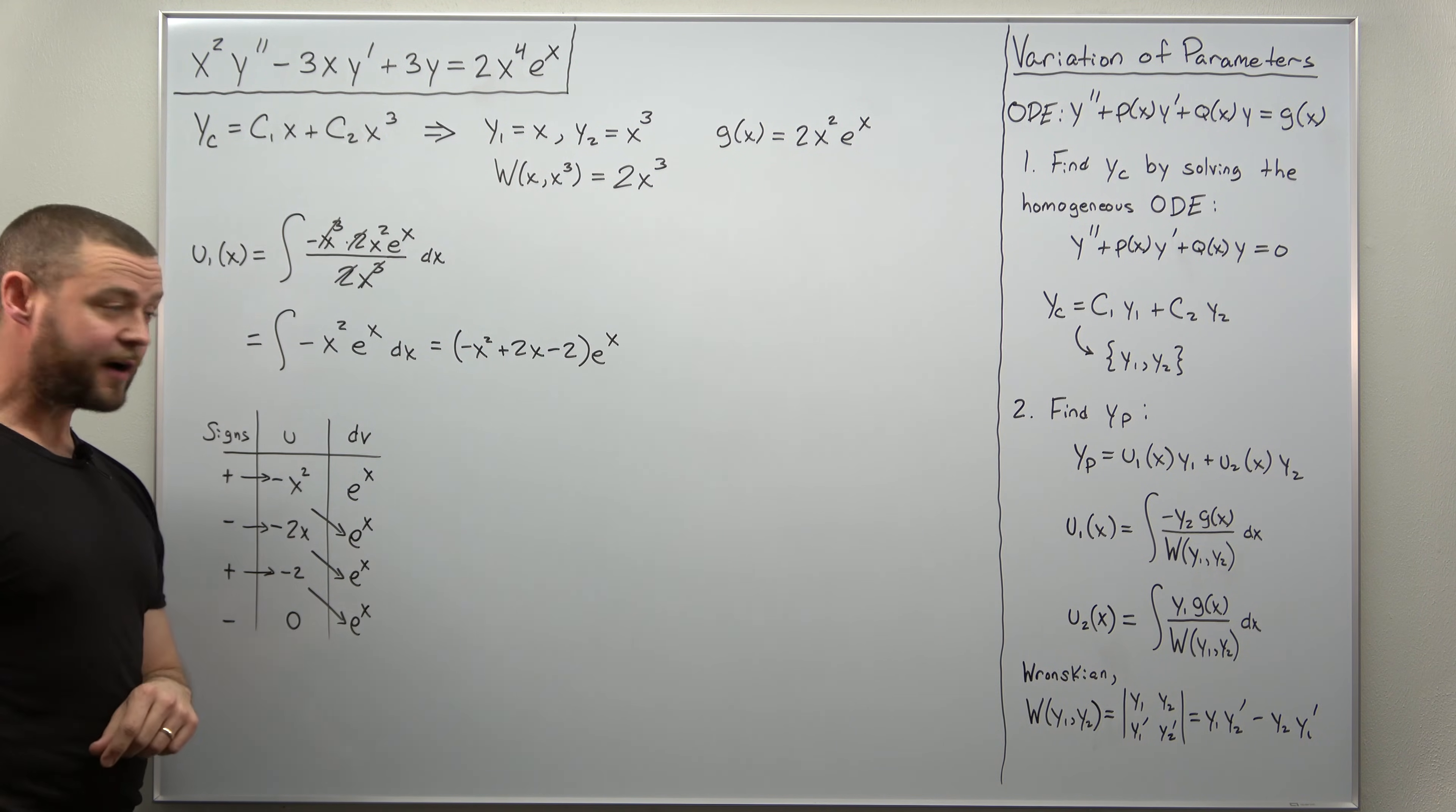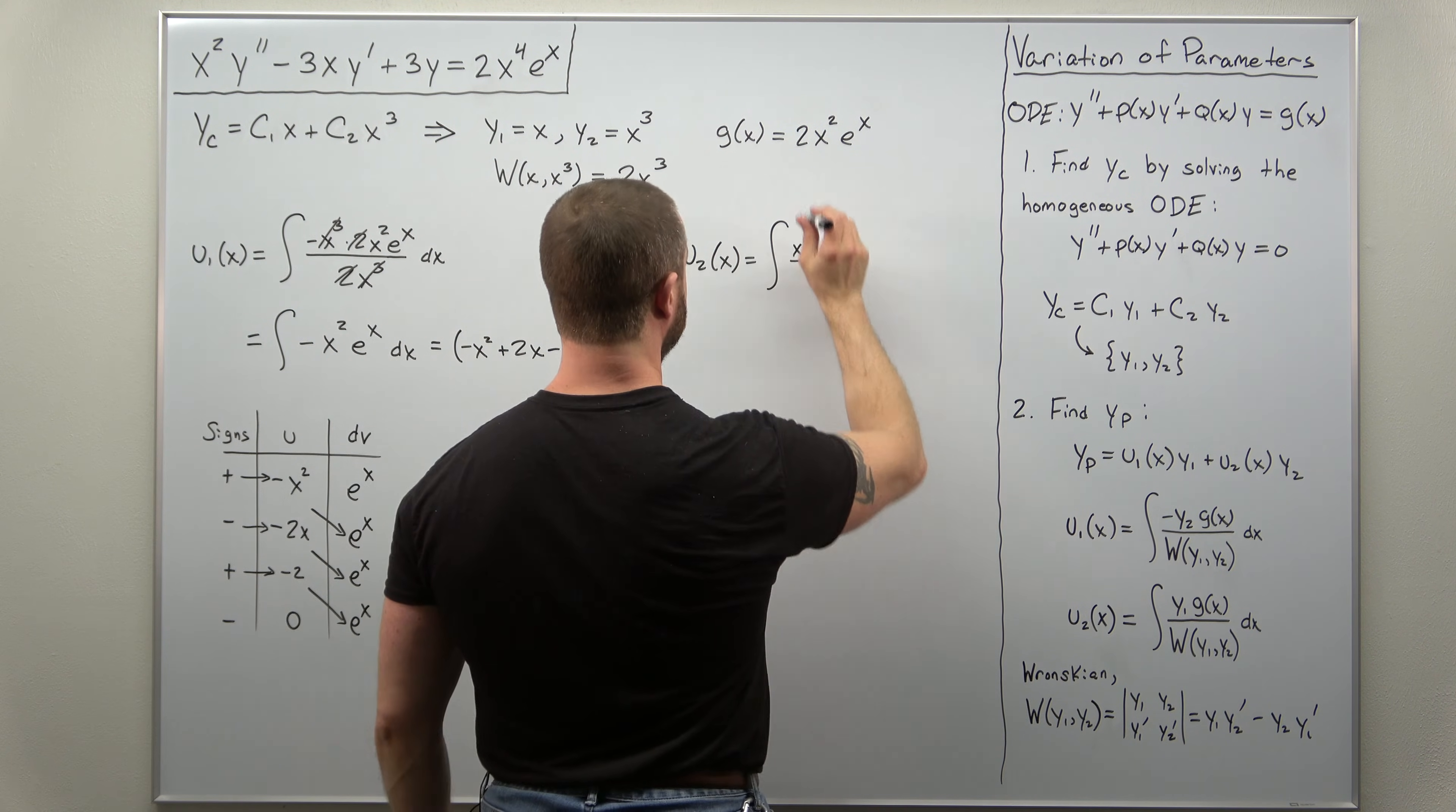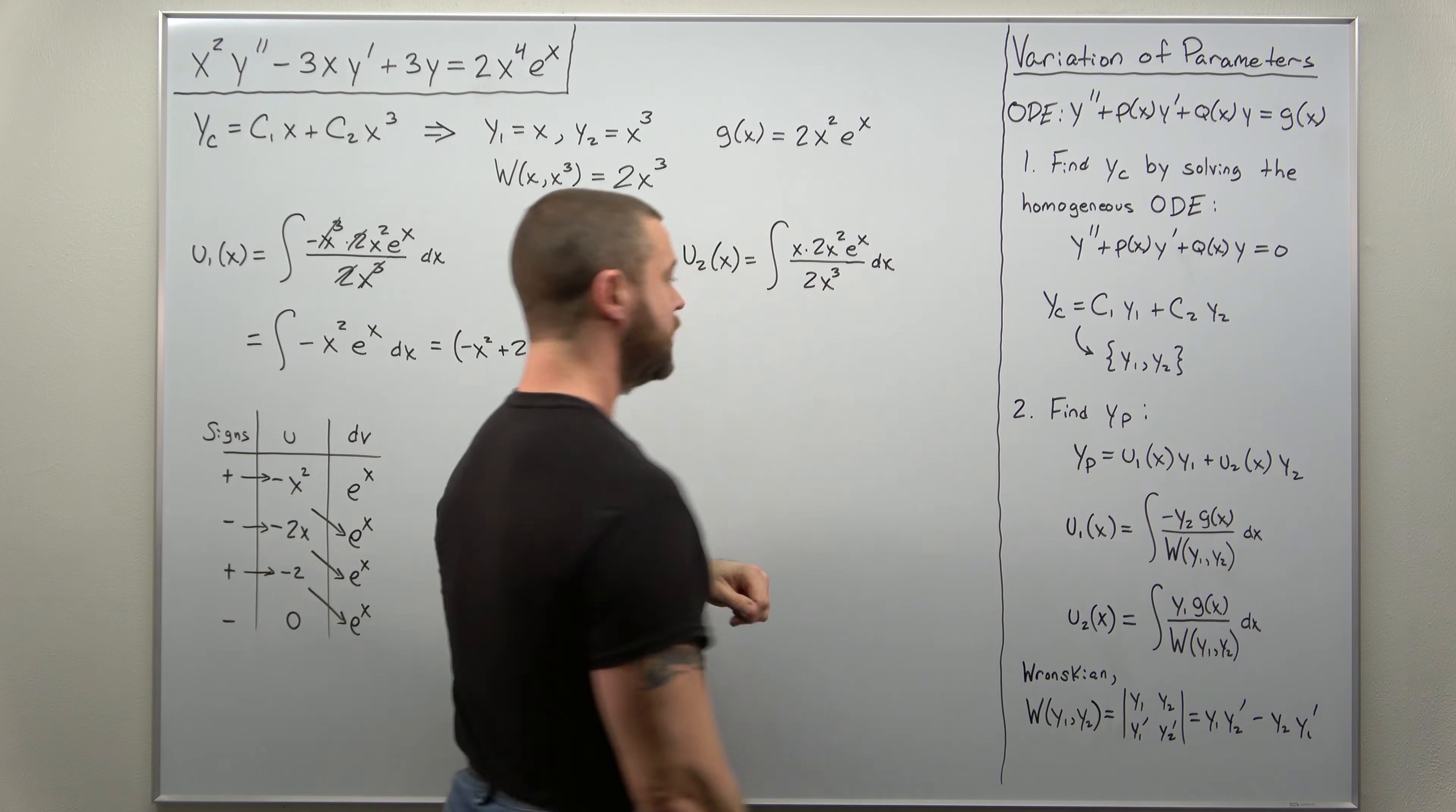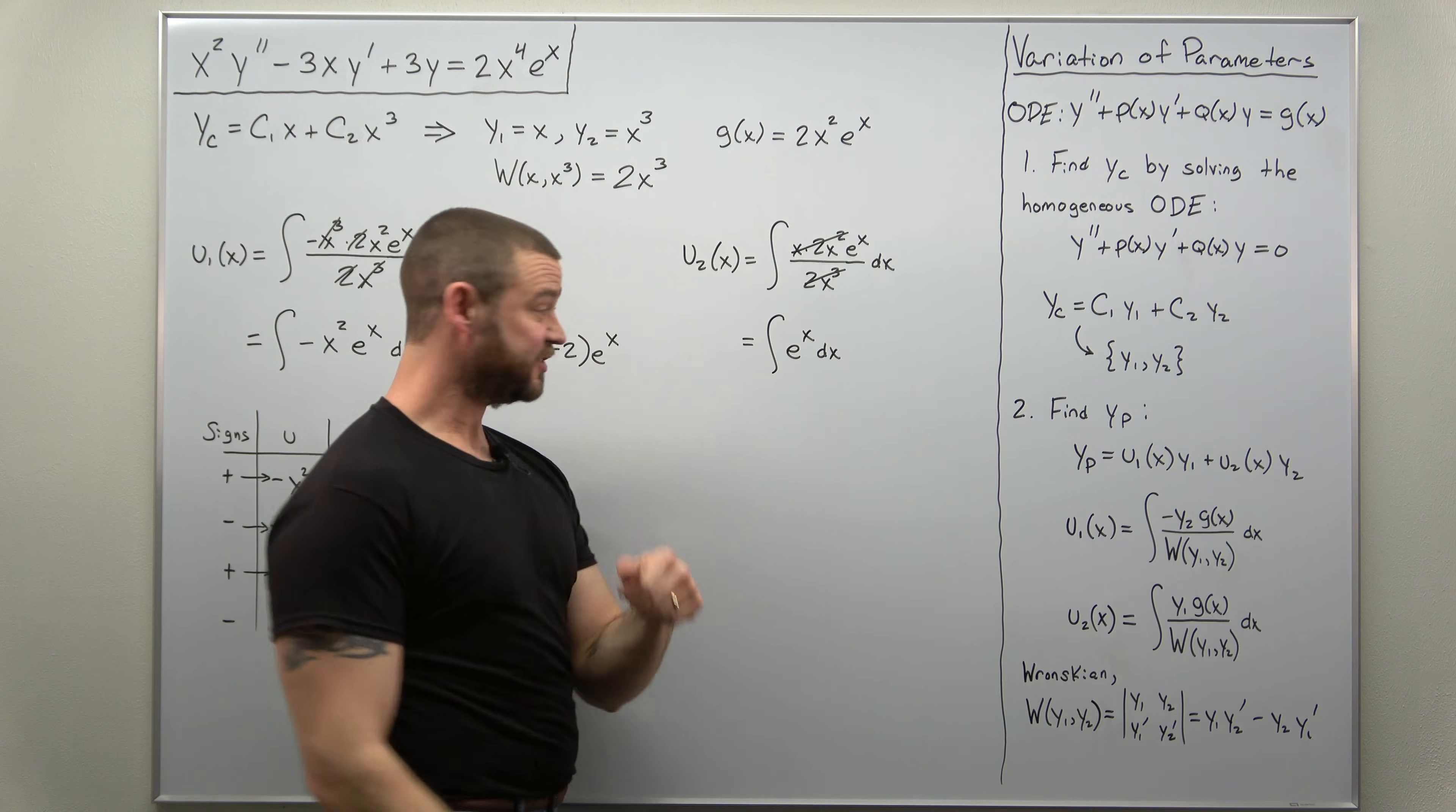All right, from here, we can now find U2. And again, we plug everything in. But our formula says we have now the integral of Y1, X, times G of X, 2X squared, e to the X. And then divided by your Wronskian, which is 2X cubed. And it looks like that simplifies nicely. The numerator has a 2X cubed factor. Same in the denominator. So it looks like this just simplifies to the integral of E to the X. And we know that. That's just E to the X.